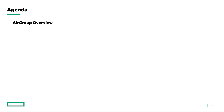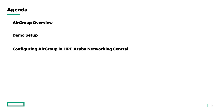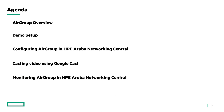We will briefly cover what AirGroup is and why it is needed in an enterprise WLAN environment. We will go over the demo setup including the detailed topology. Then we will see how to configure AirGroup in HPE Aruba Networking Central for AOS 10, cast a video from a smartphone to an Android TV on different VLANs, limit access to certain devices, and monitor AirGroup in Central.